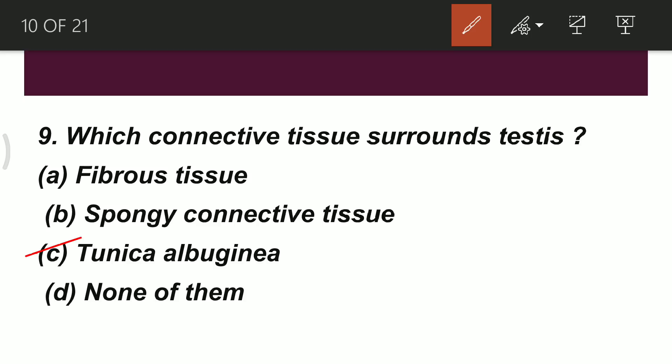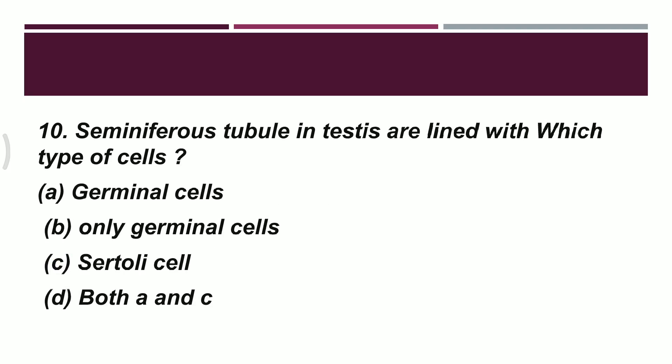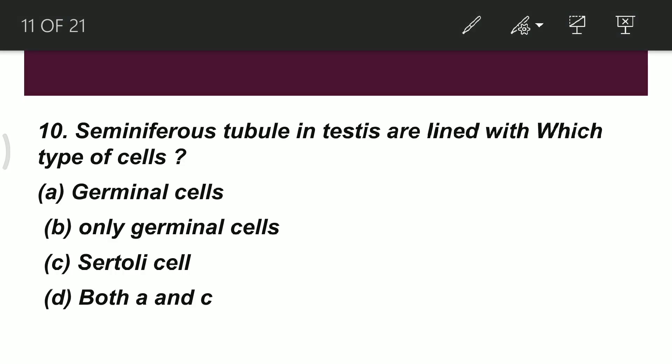Question 10: seminiferous tubules in the testes are lined with which type of cells? Option A: germinal cells only. Option B: only germinal cells. Option C: Sertoli cells. Option D: both A and C. As studied earlier, seminiferous tubules contain two types of cells — male germ cells and Sertoli cells. So the correct answer is D — both A and C.